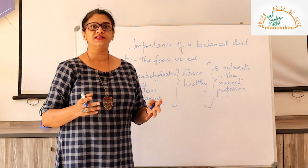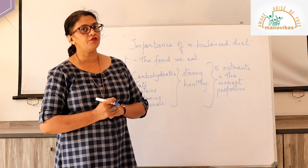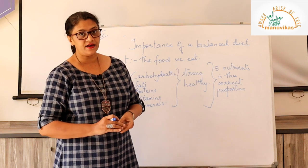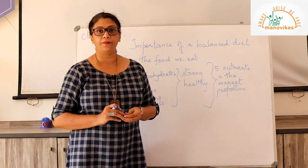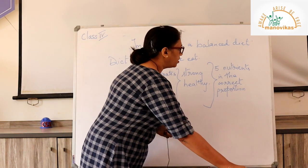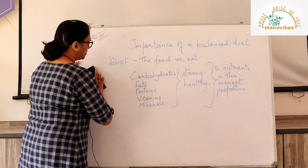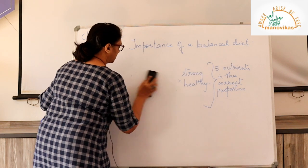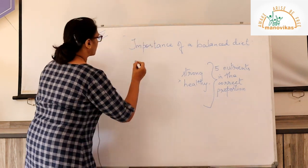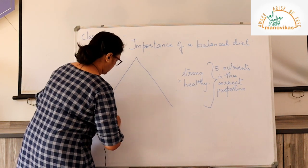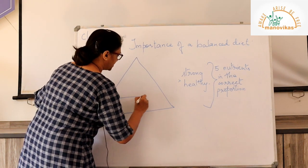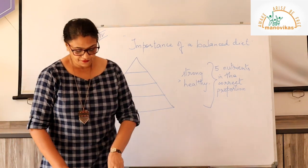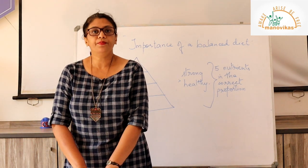To understand what is the correct proportion, we need to look at the food pyramid. You can open your textbooks to page number 17 — we have the food pyramid at the top of the page. The food pyramid is divided into four parts.